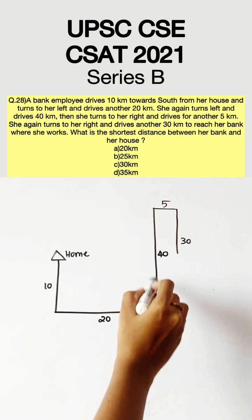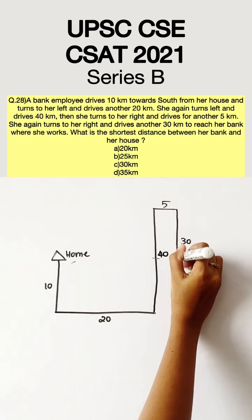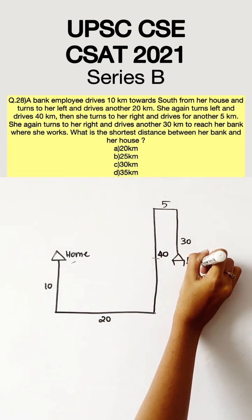I have marked 30 right here because of the 10 kilometers which we see here. So out of the 40 kilometers, 10 would be this mark and 30 would be here. This is the bank.